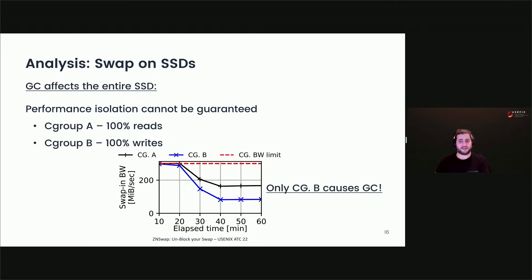The garbage collection performance effects affect the entire SSD. It is a direct consequence of the SSD performing garbage collection autonomously, impairing any isolation attempts the host wishes to maintain. To illustrate this, we perform an experiment with two C groups sharing the same swap device, each throttled to use half of the available SSD bandwidth. C group A performs random reads only, so it does not trigger garbage collection. C group B performs random writes, which eventually lead to garbage collection. The graph shows swap-in bandwidth of both C groups over time. At first both C groups sustain their maximum allocated bandwidth, but after some time the swap-in bandwidth of both C groups deteriorates — even though only C group B actually causes the garbage collection.